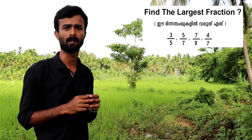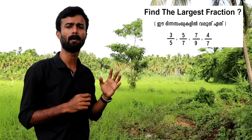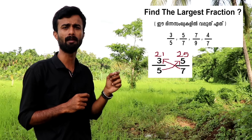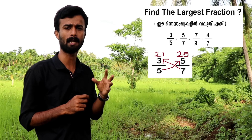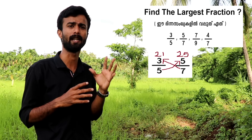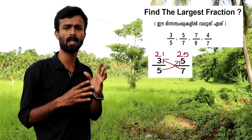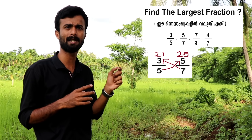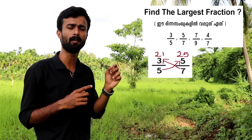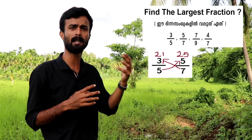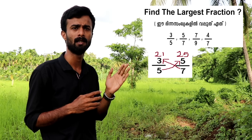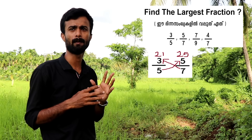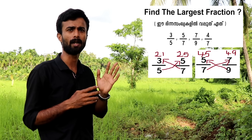For the first comparison, take 3/5 and 5/7, cross multiply: 3×7 = 21 and 5×5 = 25. The largest product means the larger fraction, so 5/7 is smaller than 3/5. We can compare 3/5 and 4/7 by cross multiplying: 3×7 = 21 and 4×5 = 20, giving 45 and 49.